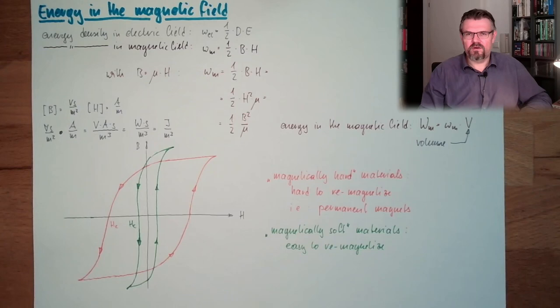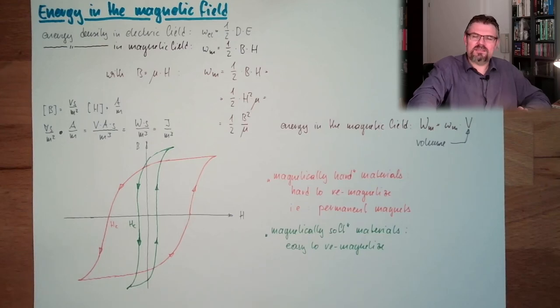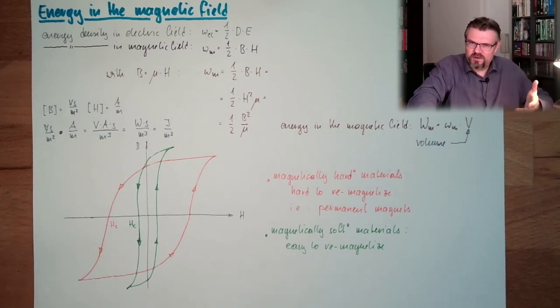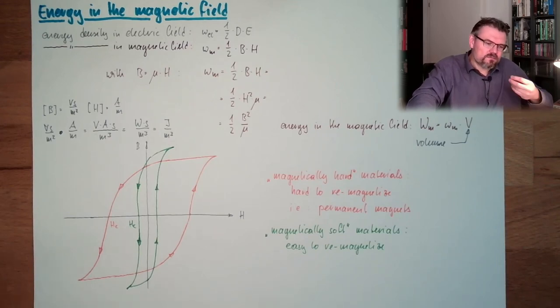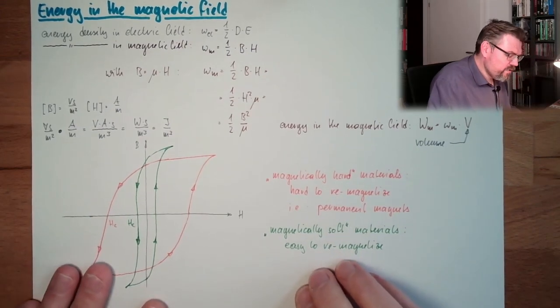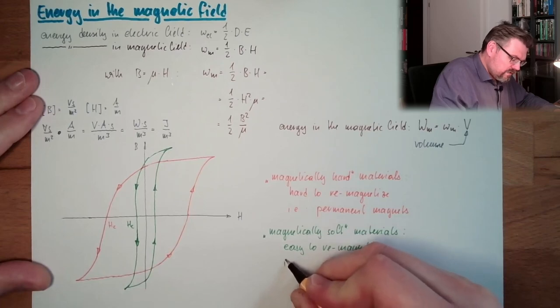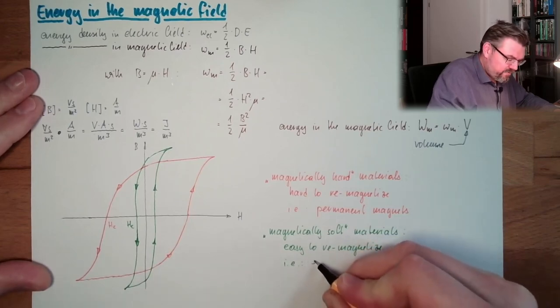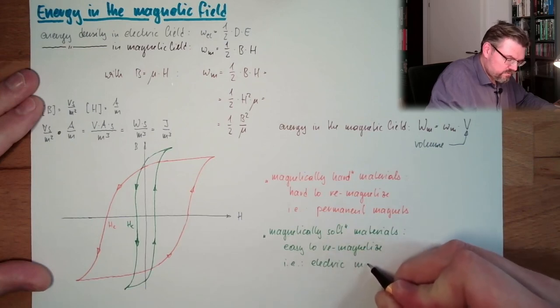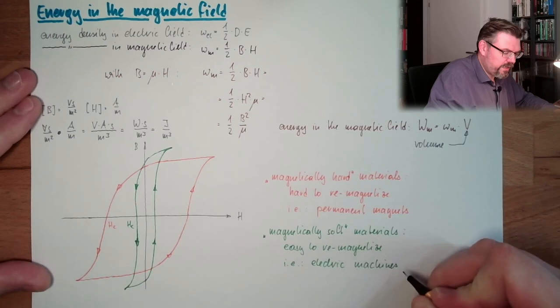Why this has to be, we will discover in future videos. But if I spend a lot of energy just to energize and de-energize my material and re-energize in the other direction, then there is less power available to do the actual work of this machine. So here we are using magnetically soft material. In example here, this is the electric machines.